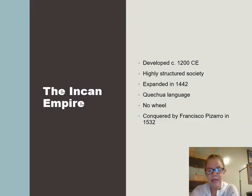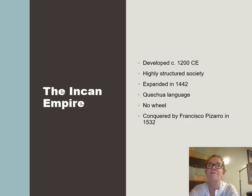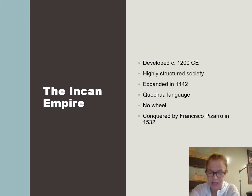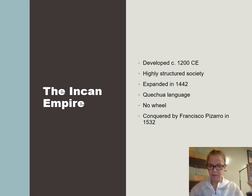Now the Inca — let's go through this quickly so we can get on with the people of North America. They developed around 1200 and developed this vast, intricate, highly structured society. They too had a feudal system, with a king who ruled over everything and administrators along the way. Everybody in their society was required to contribute — young men were warriors, women would collect berries, and even those who were blind might be collecting termites, which is something they ate.